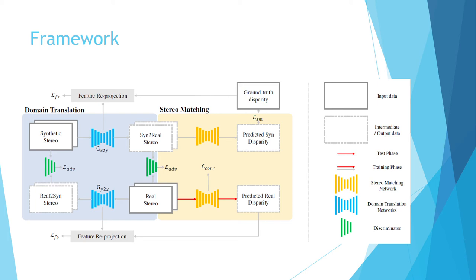Our proposed framework consists of a domain translation component and a stereo matching component. In order to maintain epipolar consistency, we present bidirectional feature reprojection loss and correlation consistency loss for assisting the joint optimization.